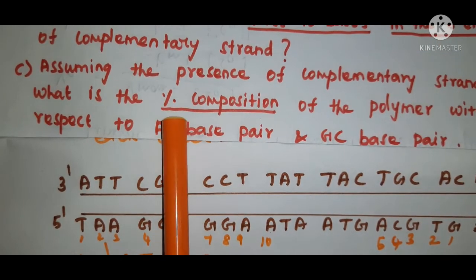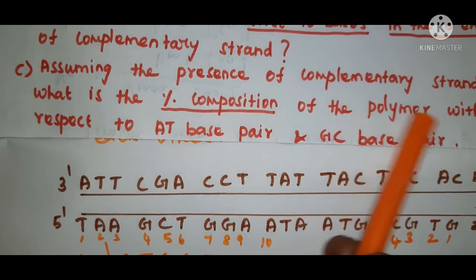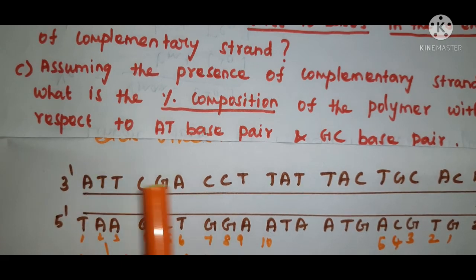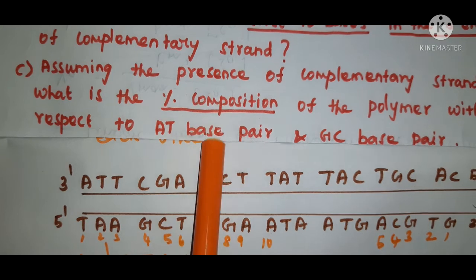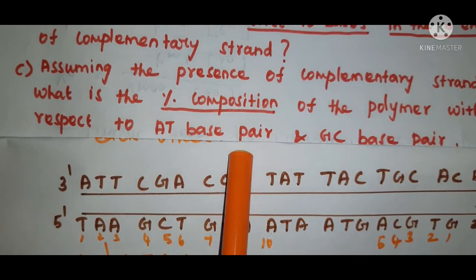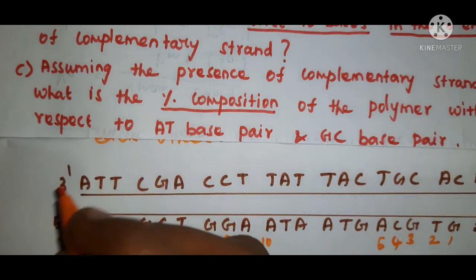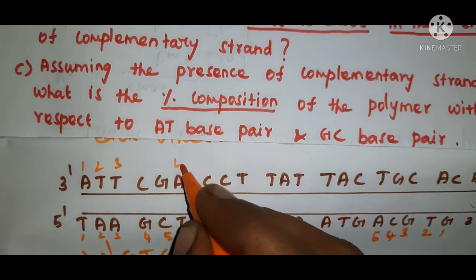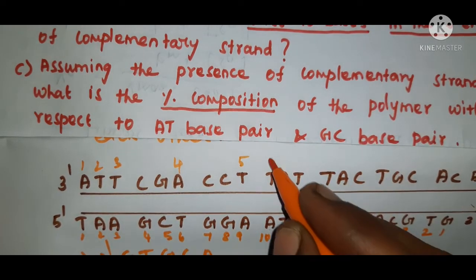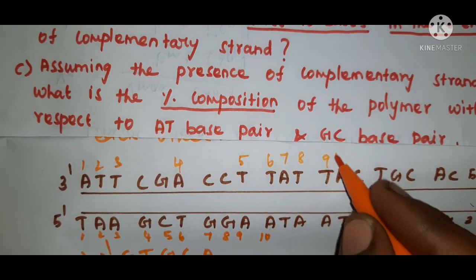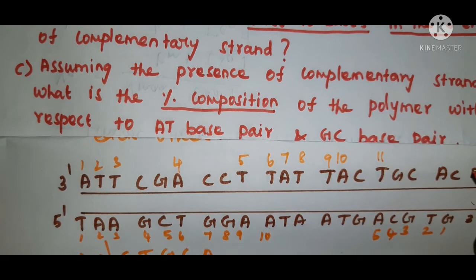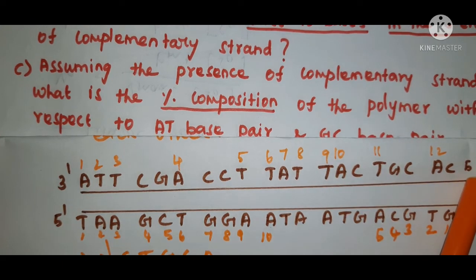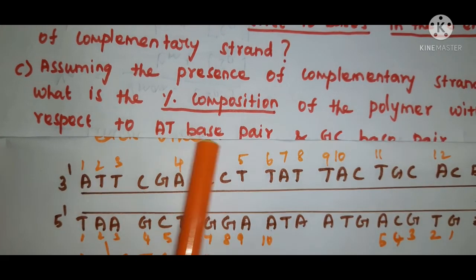The third question asks you to calculate the percentage composition of the polymer with respect to AT base pair and GC base pair. To calculate the percentage of AT base pairs, first count the number of AT base pairs: 1, 2, 3 — then continuing — 4, 5, 6, 7, 8, 9, 10, 11, 12. The total number of bases is 20, and 12 of those are AT base pairs.